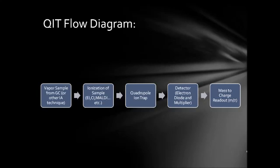Once the sample is ionized, it will go into the QIT and be separated based on mass to charge ratio. The principles as to how it will do this I'll discuss later.